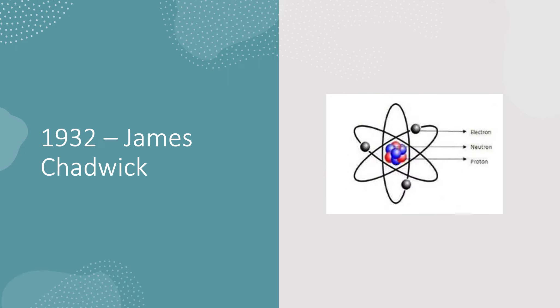And then finally, James Chadwick in 1932 discovered that the electrons which are going around in electron shells, they're orbiting the nucleus which holds the neutron and the proton.